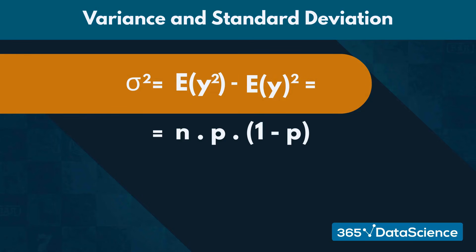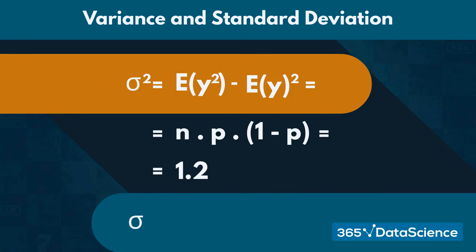If we plug in the values from our stock market example, that gives us a variance of 5 times 0.6 times 0.4, or 1.2. This would give us a standard deviation of approximately 1.1. Knowing the expected value and the standard deviation allows us to make more accurate future forecasts.